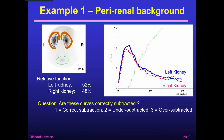Let's take a different background. This is the same renogram but using a perirenal background — this C-shaped region around the left and right kidneys. This allows us to apply a different background subtraction to each kidney, because we have two background regions rather than just one. You can see that the relative function has hardly changed — it's still very close to 50-50. But what do you think about these curves — are they correctly subtracted?